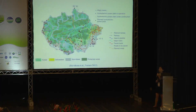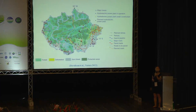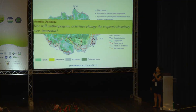In the opening talk by Paulo, we already know that the Amazon basin is experiencing very rapid urbanization and also land use change. In this context, a very important scientific question raised to the atmospheric chemist is: how will the anthropogenic activity change isoprene chemistry over Amazonia?